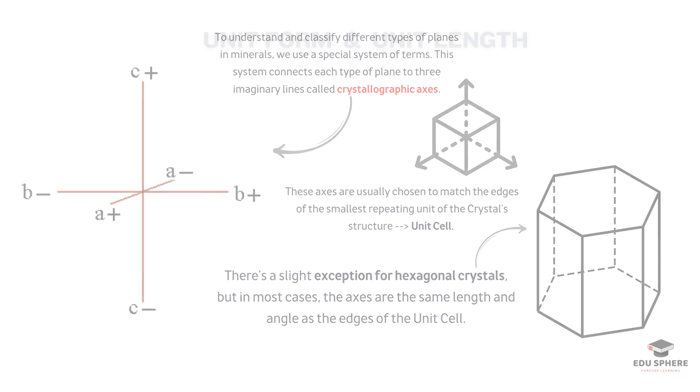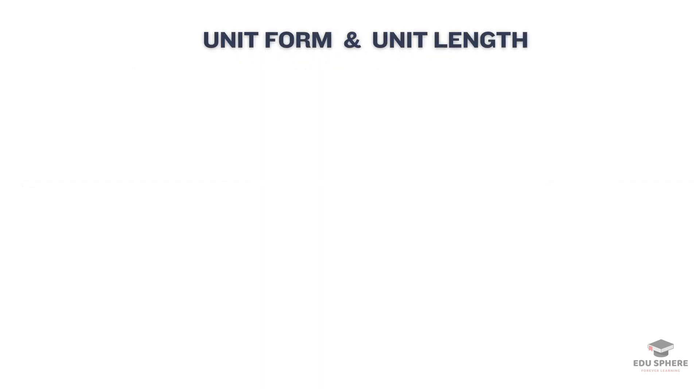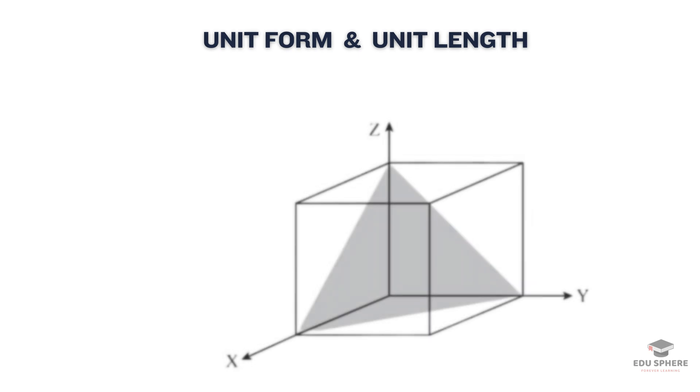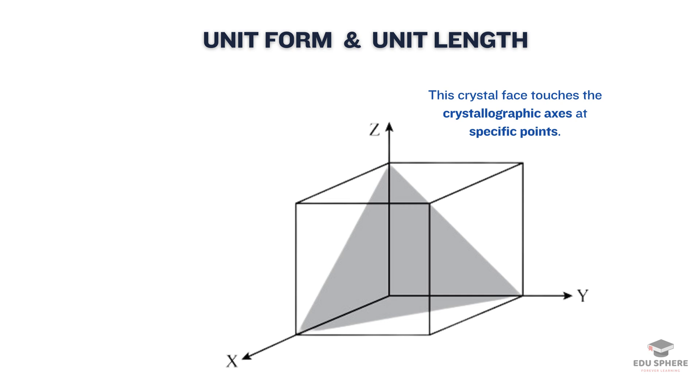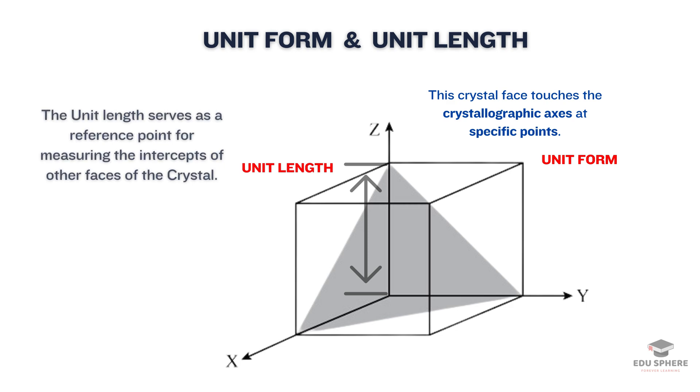Let us now discuss the terms unit form and unit length. Imagine a crystal face that touches the crystallographic axes at specific points. This face can be designated as the unit form, and these intersecting points define the unit lengths for those axes. The unit length serves as a reference point for measuring the intercepts of other faces of the crystal.